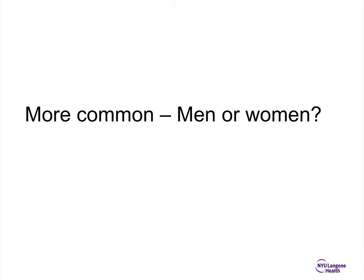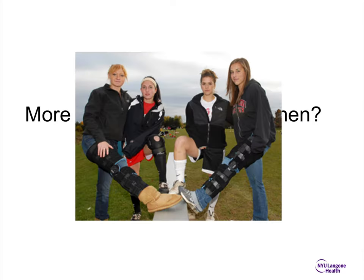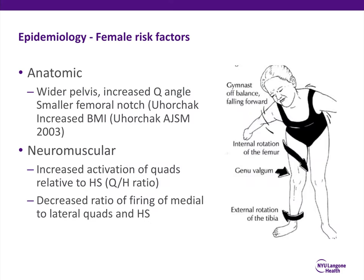The ACL is often injured, most predominantly in our younger population who plays contact sports, and it's certainly more common in women — anywhere from four to eight times the prevalence compared to men. Some of these factors include the anatomy: females have wider pelvises, an increased Q angle, and a smaller femoral notch. In terms of neuromuscular control, females tend to have increased activation of the quadriceps relative to the hamstrings, and this lack of neuromuscular control can very often contribute to the high prevalence of ACL tears in females.